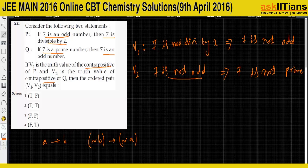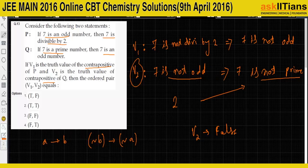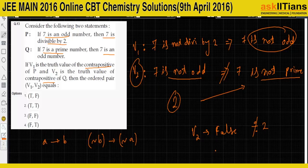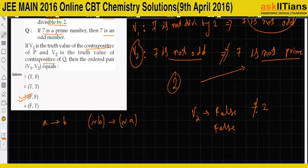For V2, the contrapositive of Q states 'if a number is not odd, then it is not prime.' This is false — for example, 2 is not odd but is still prime. Both V1 and V2 are false, so the answer is option 3.